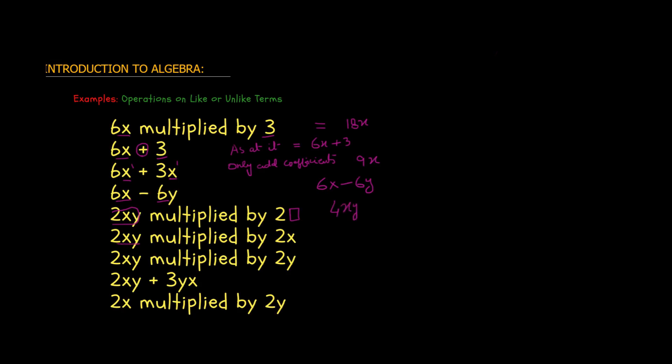Now 2xy multiplied by 2x. There is one variable in the second term; these two are still unlike terms, but because we are doing multiplication, no problem. Integer multiplied by integer gives 4. Then x multiplied by x is x squared — if x is multiplied 2 times, the exponent of x is 2. So the result is 4x²y.